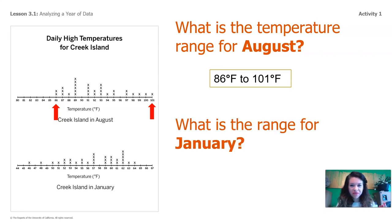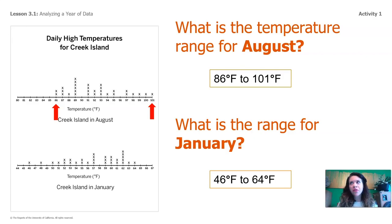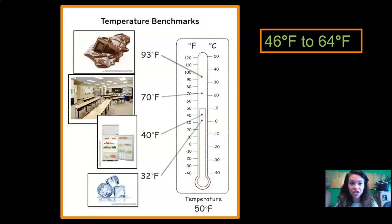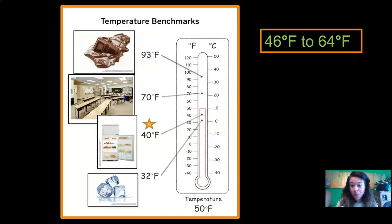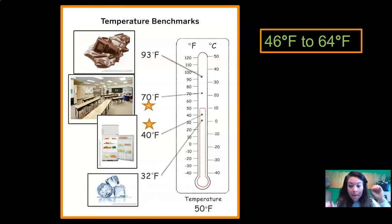What is the range for January? It's 46 degrees to 64 degrees. It's kind of hard to visualize 46 to 64 degrees, so let's use our visualization chart. Here are the temperature benchmarks — can you find where 46 degrees would be on this chart? Point to the screen where you would put a little star for 46 degrees. And where do you think 64 degrees would be? It's right below 70. So we know our range of temperatures for January fall in between refrigerator temperature and classroom temperature.